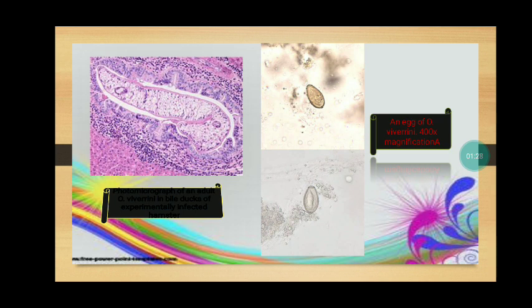The picture shows a photomicrograph of an adult Opisthorchis viverrini on the left side, from the bile duct of an experimentally infected hamster. The right side shows an image of an egg of Opisthorchis viverrini at 400 times magnification.